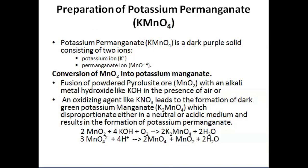Next, potassium permanganate is a dark purple solid consisting of two ions: the potassium ion and the permanganate ion. In order to prepare potassium permanganate, the first step is the conversion of MnO2 into potassium manganate by fusion of powdered pyrolusite ore with an alkali metal hydroxide like potassium hydroxide in the presence of air, or using an oxidizing agent like KNO3. This forms dark green potassium manganate, which disproportionates in neutral or acidic medium to give potassium permanganate.